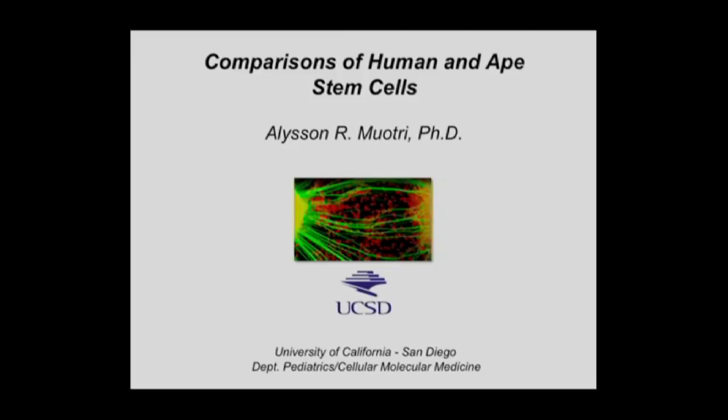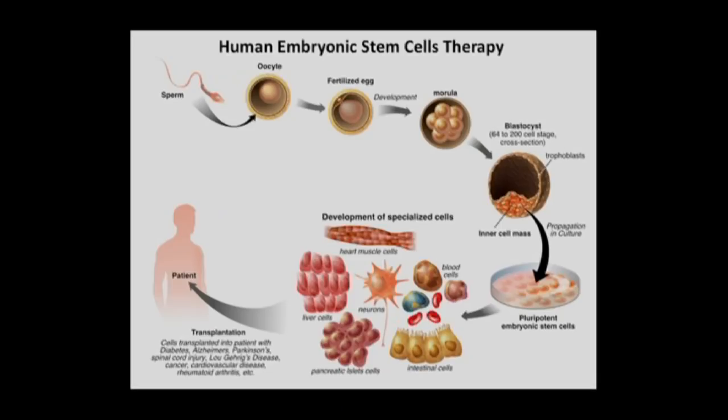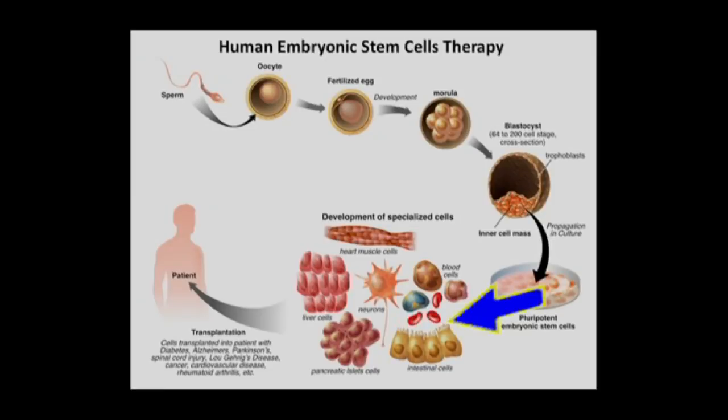Next we have Alessandro Moutry from UCSD with an exciting new report on comparisons of human and ape stem cells. He will talk about the use of stem cells as a novel tool for evolutionary studies — something virtually impossible to think about just three or four years ago. Human embryonic stem cells can be isolated from the human blastocyst, cultured under the right conditions, caused to self-renew and propagate indefinitely, and induced to differentiate into multiple cell types of the body. That capacity is called pluripotency.